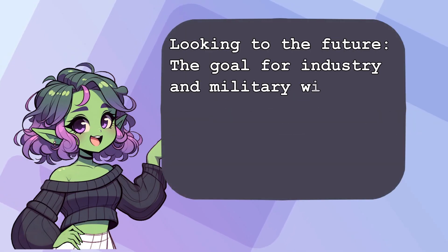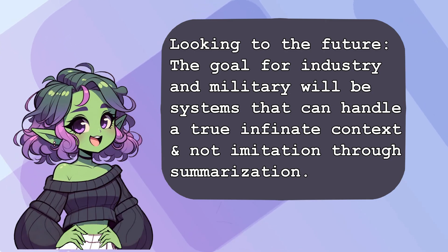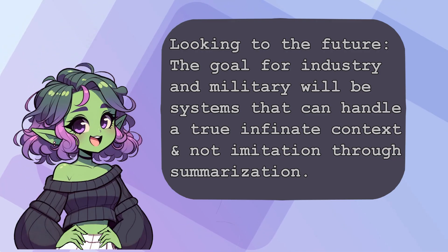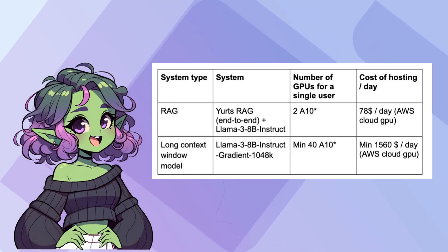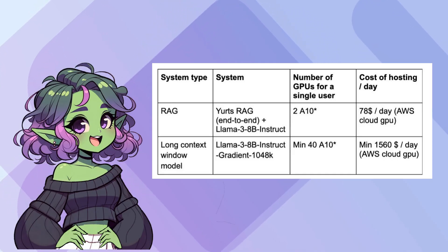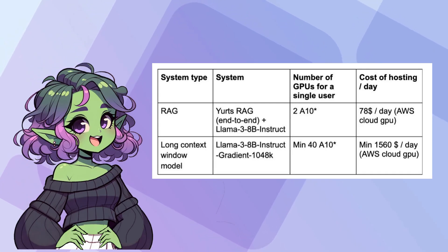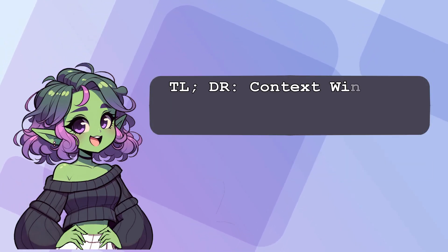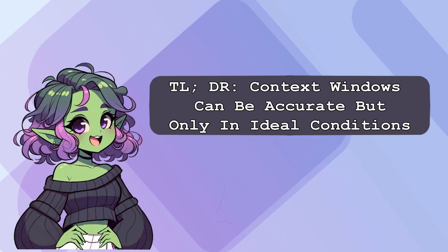Some experts dream of a future with limitless context windows where AI can truly remember everything. It's a nice idea, but we're definitely not there yet. Even now, many systems use summarization combined with retrieval-augmented generation to simulate extended memories. It's really smart, honestly, but it's not the same as true infinite recall.